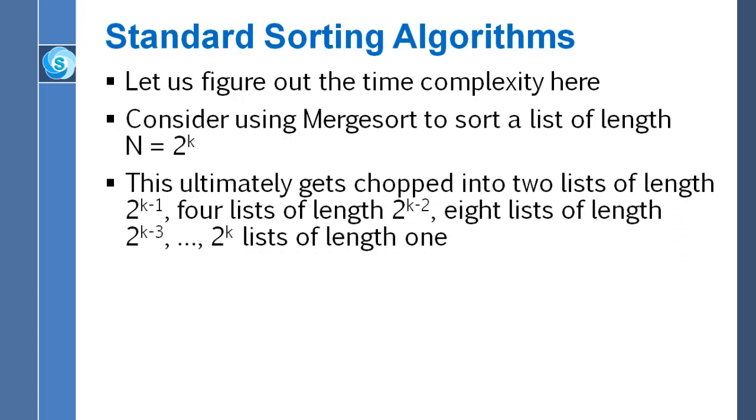This is very repetitious at this point. If we start with a list of length two to the k, we cut that in half and we get two lists of length two to the k minus one. We chop those and we get four lists of length two to the k minus two. We chop each of those subarrays and we get eight subarrays of length two to the k minus three and so forth.